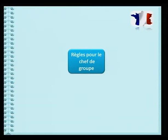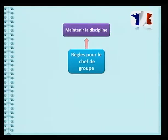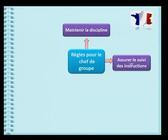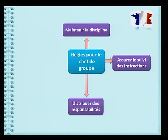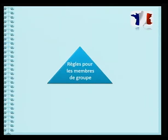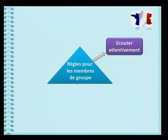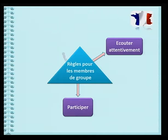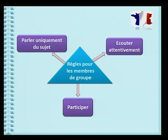Discuter en groupe, cela s'apprend. Voyons maintenant les règles qui mènent à une discussion de groupe réussie. Quand tu es responsable de groupe, tu es d'abord appelé à maintenir la discipline. De plus, tu assures le suivi des instructions. En outre, tu distribues des responsabilités. Enfin, tu accordes la parole à chaque membre. Quand tu es membre de groupe, tu écoutes attentivement quand les autres membres s'expriment. Ensuite, tu participes à la discussion. Enfin, tu parles uniquement du sujet.